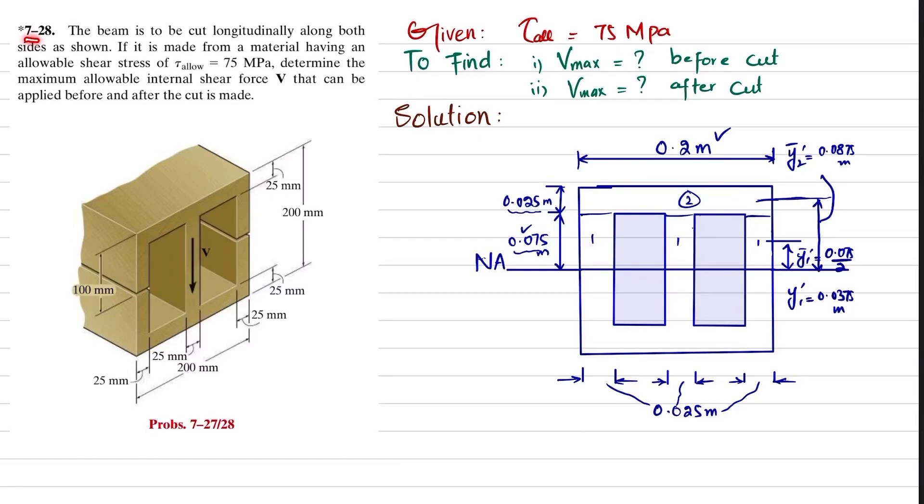Welcome back to problem 7-28. The statement is: the beam is to be cut longitudinally about both sides as shown. If it is made from material having allowable shear stress of 75 megapascals, determine the maximum allowable internal shear force V that can be applied before and after the cut is made.